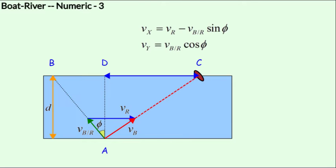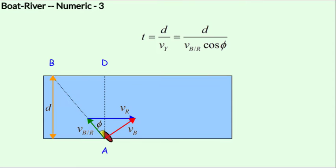First, we'll obtain the time taken to cross over. Since the vertical displacement is known to us as d, and the component of the velocity along the y axis is vb with respect to r cos of phi, and there is no acceleration along the y direction, the time taken will be d over vb with respect to r cos of phi. This is the time for which the boat is being rowed.